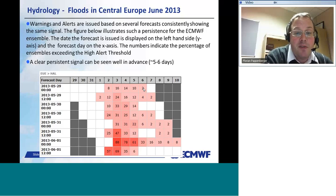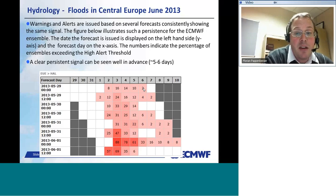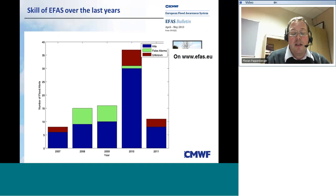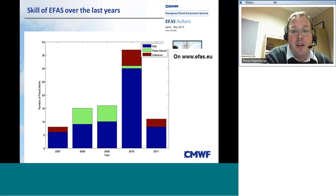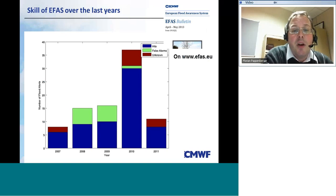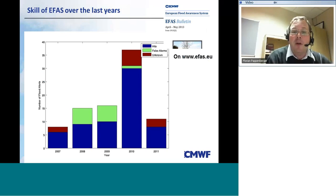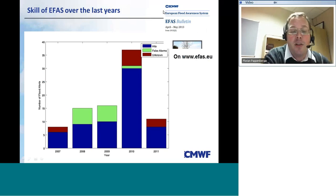The issue with showing single case studies is that it's not good enough for verification. There's a simplistic verification for the European Flood Awareness System for the last years showing hits, false alarms, and unknowns. On average we have more hits than false alarms or unknowns. This can also be shown in more complicated skill settings. This forecast system is skillful — it's not just a single case study that works. We publish a bi-monthly bulletin on the EU website reporting our past performance constantly.